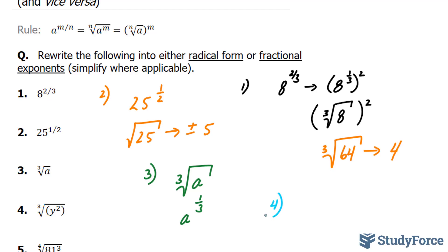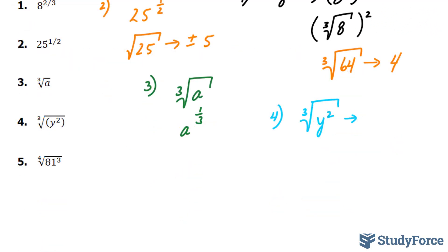Moving on to question 4, we have the third root of y to the power of 2. We know that the third root of simply y is y to the power of 1 over 3, and we established that with example 3 and example 1.